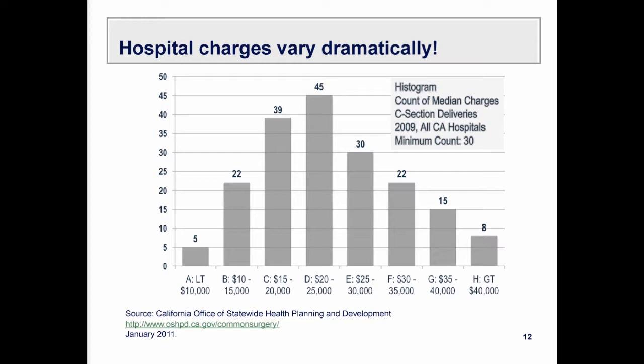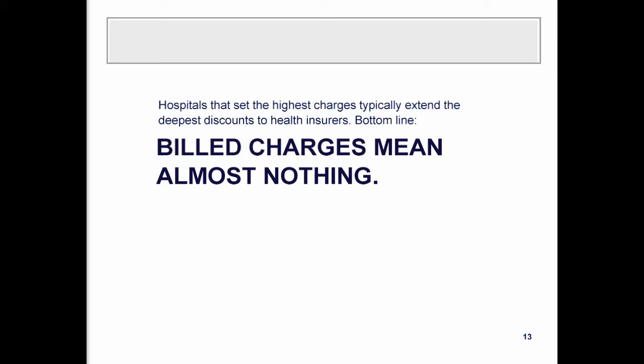I want to make this point about hospital charges one more time. This graph looks at billed charges for C-section deliveries in 2009. The charges billed to patients by hospitals vary from less than ten thousand dollars at five hospitals to more than forty thousand dollars at eight hospitals — and everything in between. The one takeaway: billed charges mean almost nothing. It's a list price; very few insurers actually pay that.